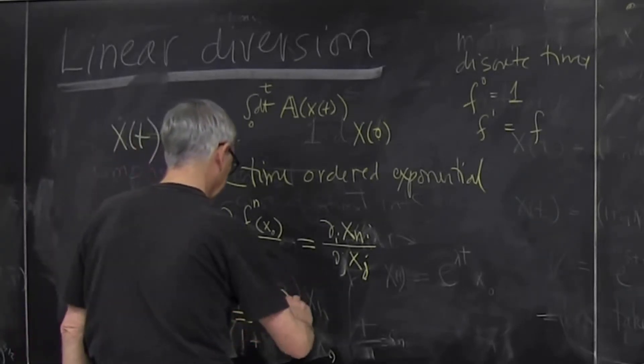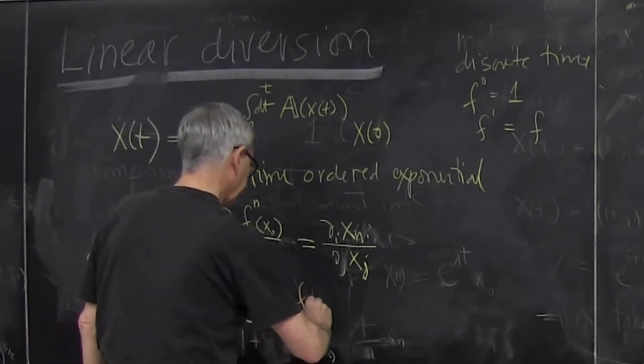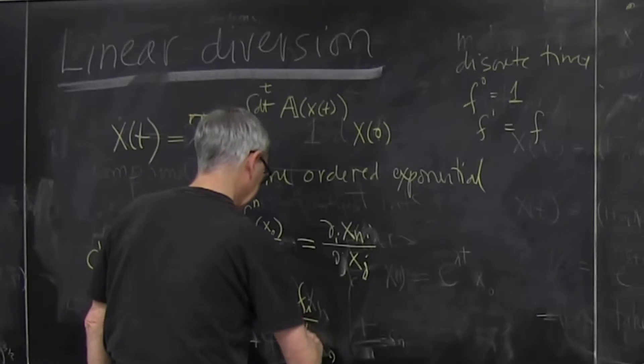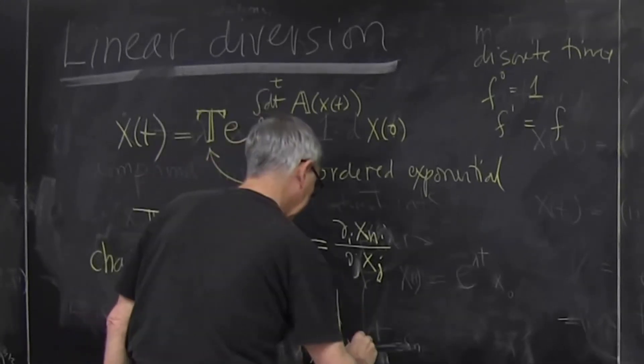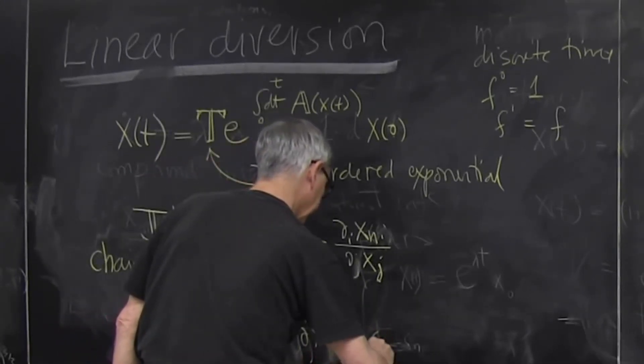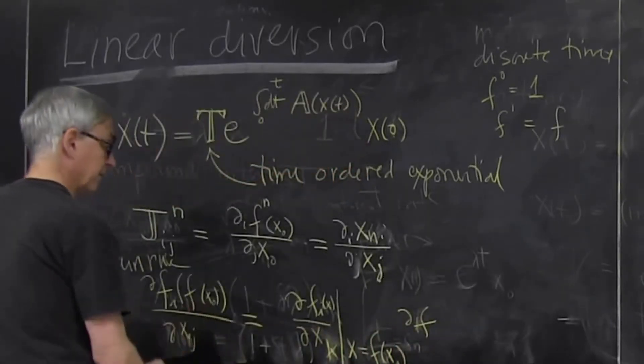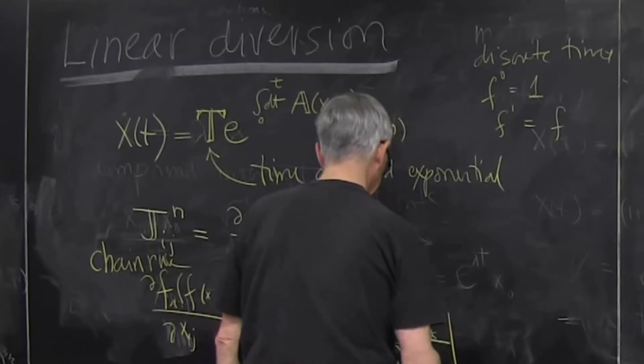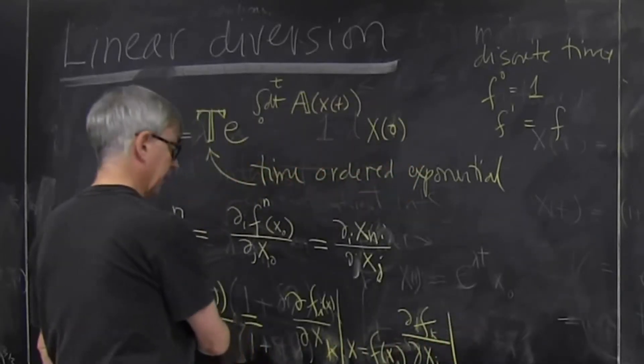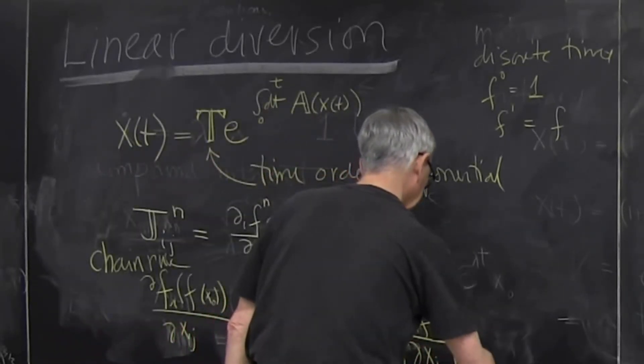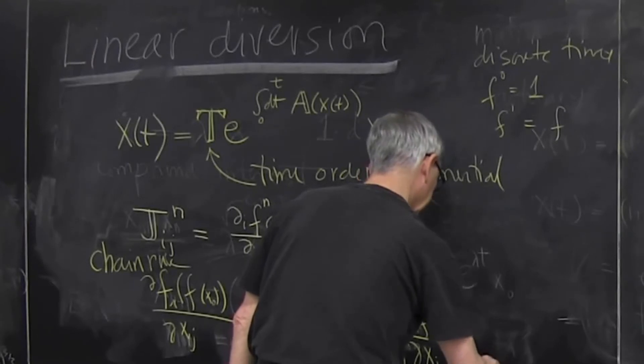So this by chain rule is derivative of f_i with respect to x_k, evaluate it at x equals function of x_0. Then take a derivative of the argument which is function itself. This one is evaluated at this argument, at x equals x_0 initial point.